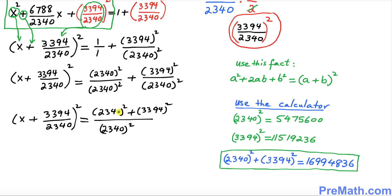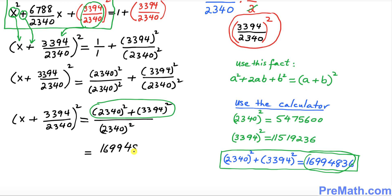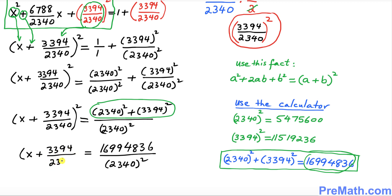In the next step, using a calculator, I computed this quantity. You can see that the numerator works out to 16,994,836, divided by 2340 squared. So on the left: x plus 3394 divided by 2340, whole squared, equals 16,994,836 over 2340 squared.